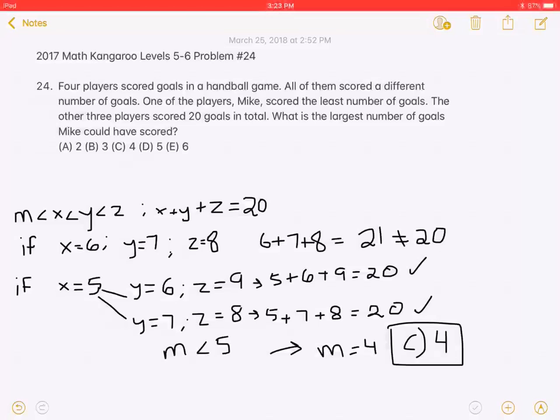Let's organize the scores in increasing order. Let M represent Mike's score. X, Y, and Z are the scores of the other three players.